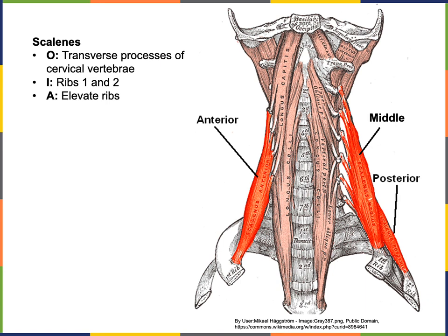The scalene muscle group has three muscles on each side: anterior, middle, and posterior. While both the anterior and middle scalene have their insertion onto the first rib, the posterior scalene inserts onto the second rib. Together the scalene muscle group has an origin from the transverse processes of the cervical vertebrae and insertion onto ribs one and two, with the action of elevating the ribs to assist with inspiration, drawing air into the lungs.